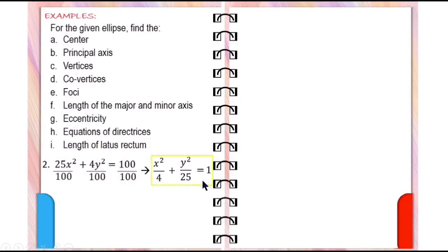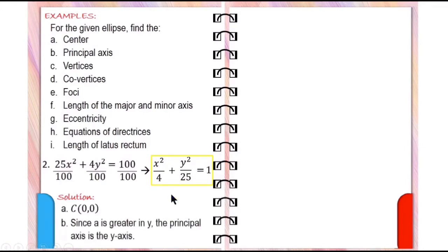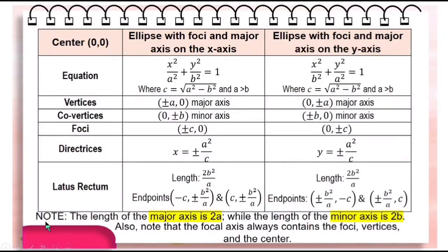Thus, the center is at the origin. The principal axis is the y-axis since the denominator is greater in the y squared term. The equation is of this form — A is greater in y. These are the vertices, co-vertices, foci, directrices, and latus rectum.